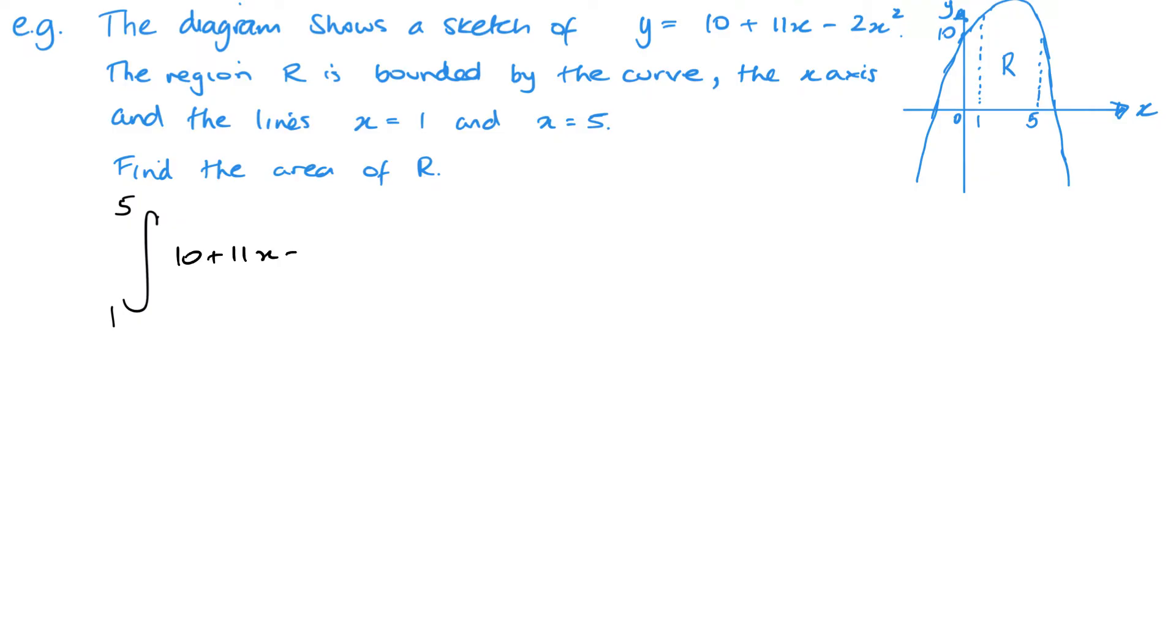Now it's just the same as before. So integrating this we get 10x + 11x²/2 - 2x³/3, and that is of course between 5 and 1. And then I want to make sure I substitute 5 in and then substitute 1 in.